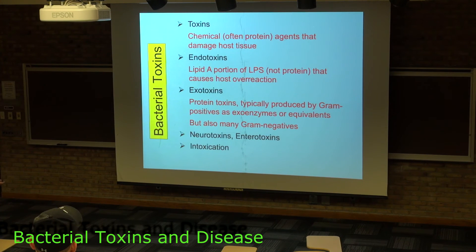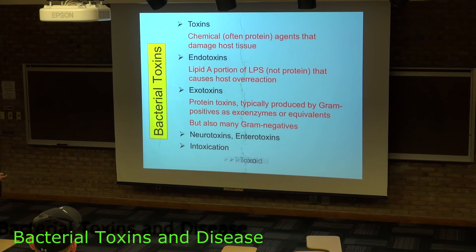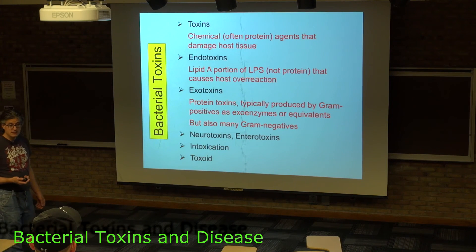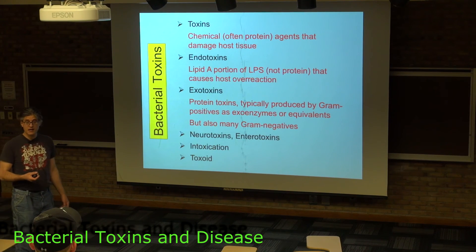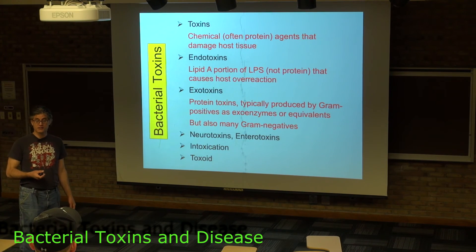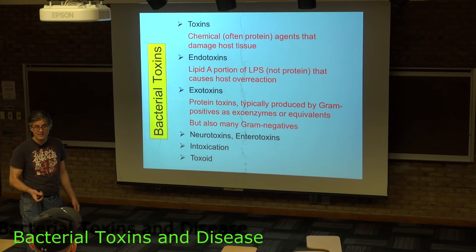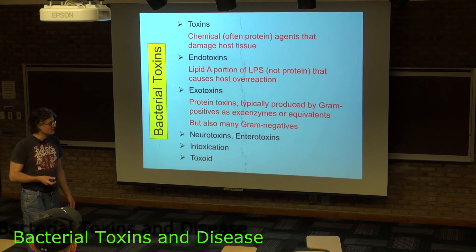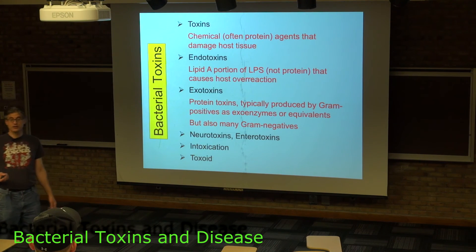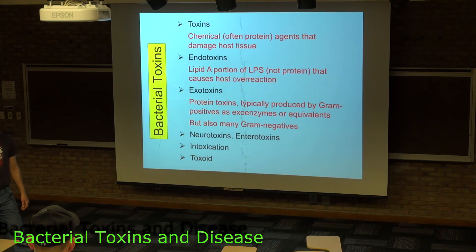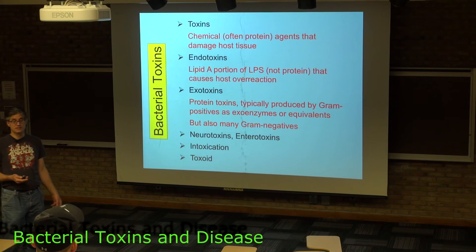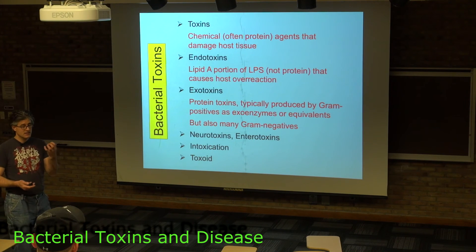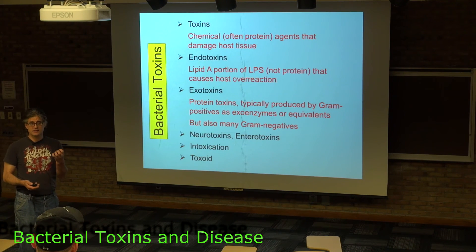So if you have a disease caused by toxins, it's called an intoxication. You can also vaccinate against these toxins using vaccines called toxoids. An example of a toxoid vaccine is the tetanus vaccine.